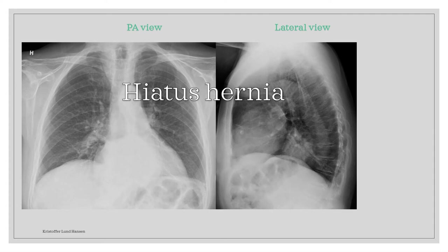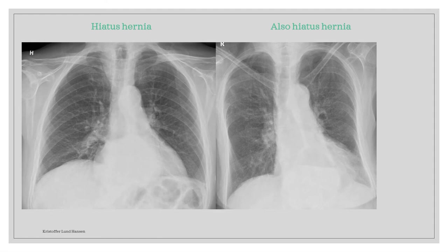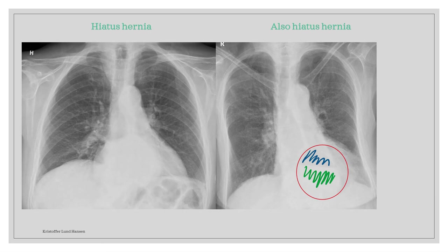If you remember from the case in the previous video, that was also a case of hiatus hernia, but it looked quite different. Here I've added the PA view of that last case on the right, while this case is on the left. Both are cases of hiatus hernia, but they don't look the same. In the older case, we can clearly see the air-liquid level inside the structure, with the air pocket colored blue and the liquid pocket colored green. In the current case, however, there is no such air-liquid differentiation. This is completely normal, and both cases are examples of hiatus hernias. It is easier to conclude when we have the air-liquid differentiation, but it is what it is.